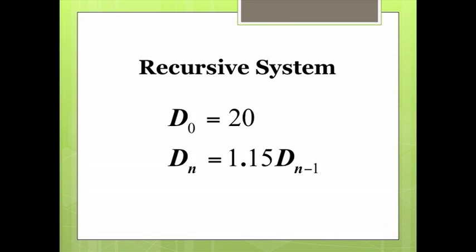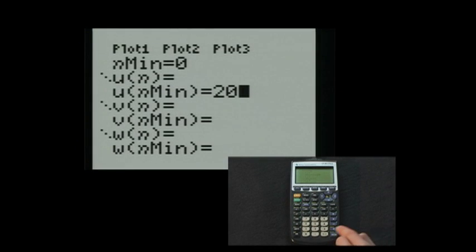Consider the recursive system d sub 0 equals 20 and d sub n equals 1.15 d sub n minus 1. We will enter this system into u of nmin and u of n. Scrolling to u of nmin, we type 20. Notice that when you press enter, the calculator automatically places curly brackets around the number.